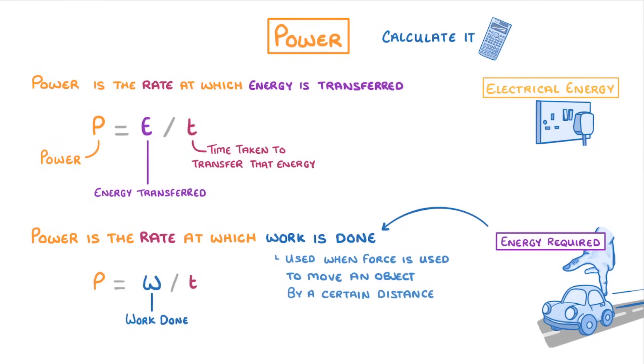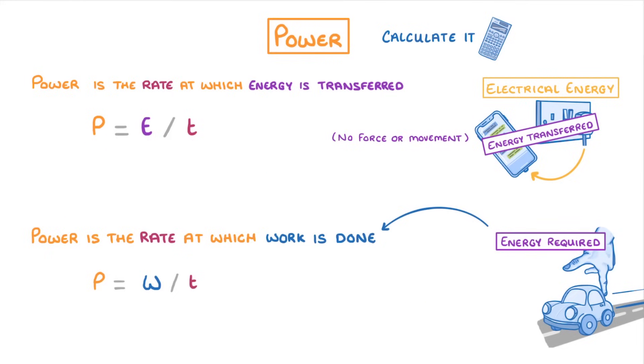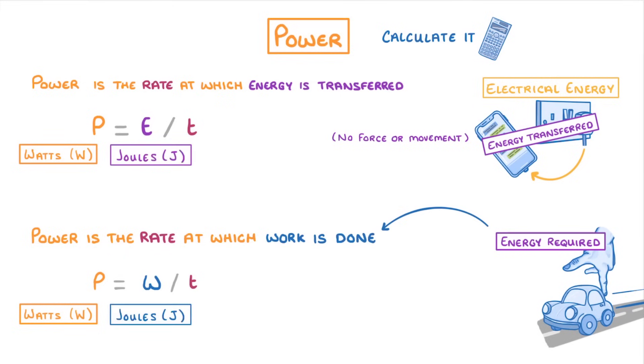Whereas if electrical energy was transferred from a plug socket to your phone, we'd refer to that as just energy transferred, as there's no force or movement involved. In both cases though, power is measured in watts, energy transferred and work done are measured in joules, and time is measured in seconds.